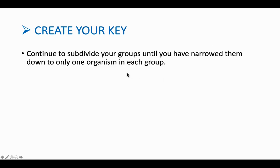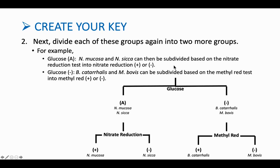Drawing out the key is really just continuing to subdivide all of our groups until we've narrowed it down so that there's only one organism in each group. We can see we've been successful with this key: from our first set of four organisms, we now have one organism at the end of each branch of our flowchart, and we can identify each one by their set of characteristics.